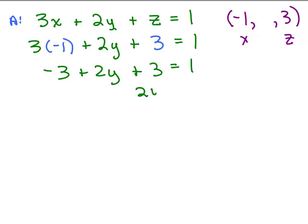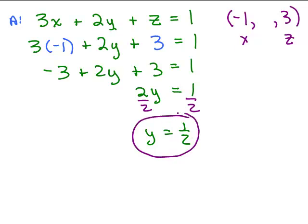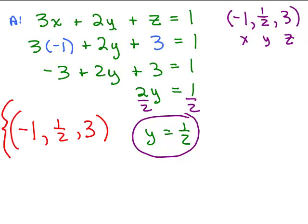Some people think they must have the wrong answer if they get a fraction — but fractions are numbers too. So it looks like the solution is the ordered triple (negative 1, one half, 3). We need to verify that by checking all three original equations. That's the last thing to do — definitely check your answers.